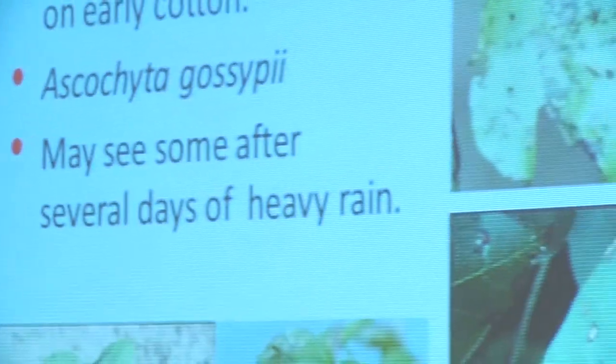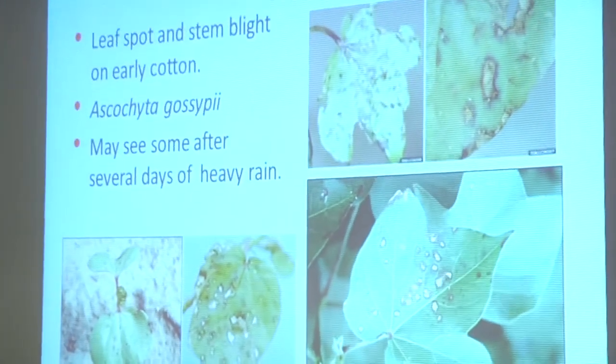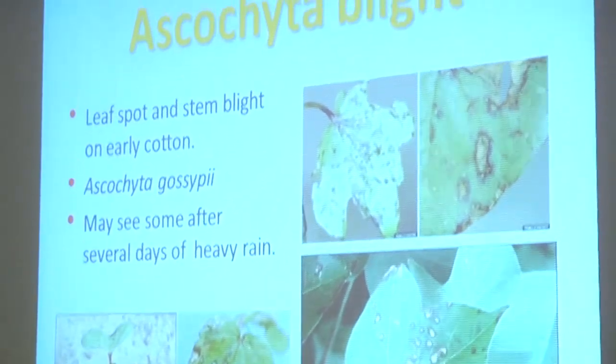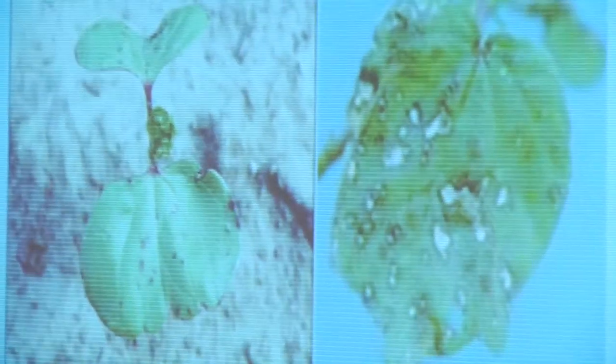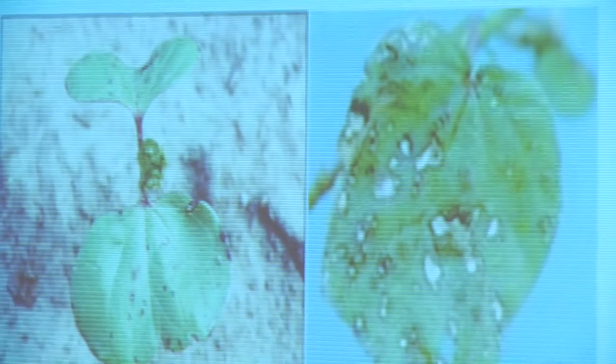Another seedling disease is Ascochyta blight — you again get small leaf spots on the cotyledons and younger leaves. The difference between this one and the bacterial disease is that these spots look dry, whereas with angular bacterial leaf spot you definitely have wet-looking tissue surrounding the lesion. The bacteria produce enzymes that break down cell walls, which is why you get the water-soaking look to the lesions. That's not what you get with Ascochyta — those spots are dry.